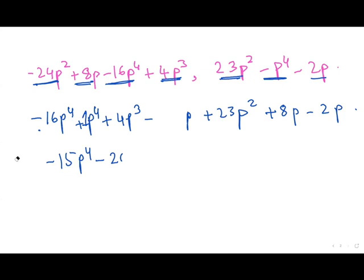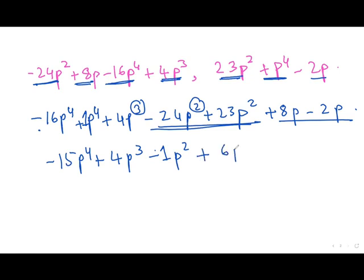Sorry. Here you cannot do anything because this is cube and this is square, so we will keep this like this only. Plus 4P cube. And here this is negative 1P square, and this is plus 6P.